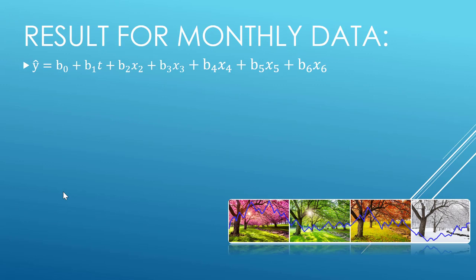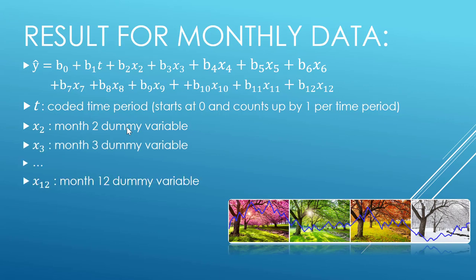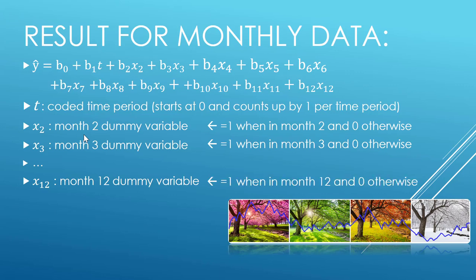The t here is our coded time period starting at zero, and then x2 through all the way to x12 are our dummy variables. In this case we go all the way to 12.